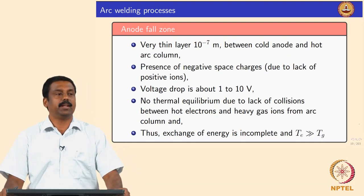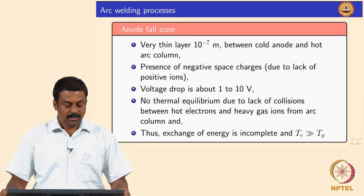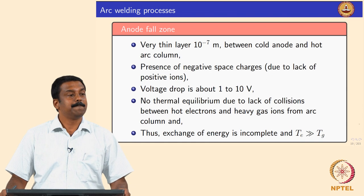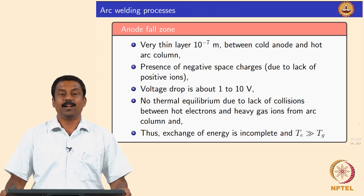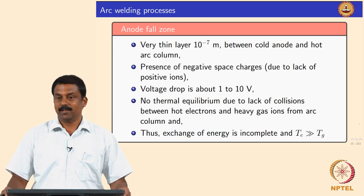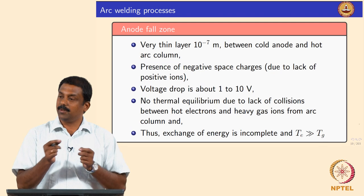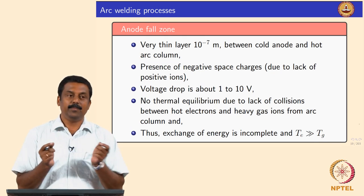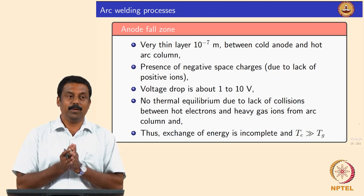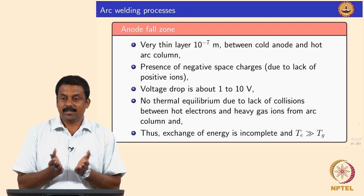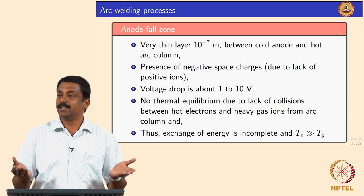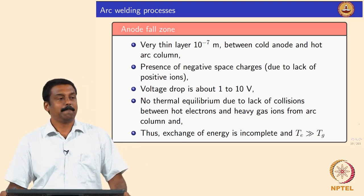We have looked at three regions: the anode fall zone, cathode fall zone, and the arc column. The anode fall zone and cathode fall zone are just above both the anode and cathode — extremely tiny. If these zones expand, you have a serious problem with arc stability because if voltage changes dramatically, you have a problem of energy gain.